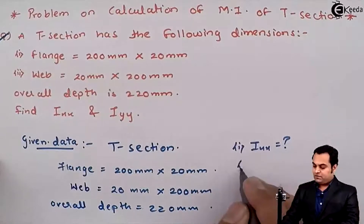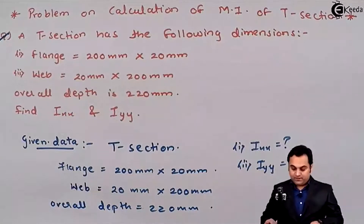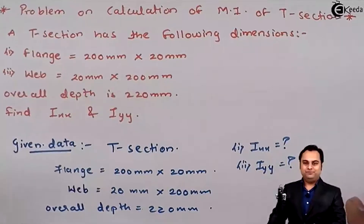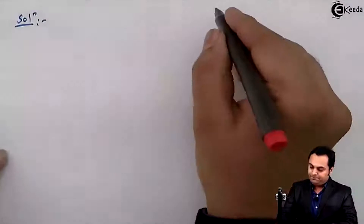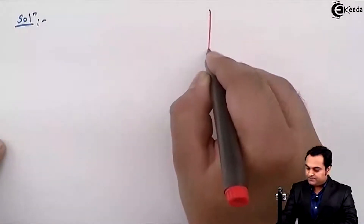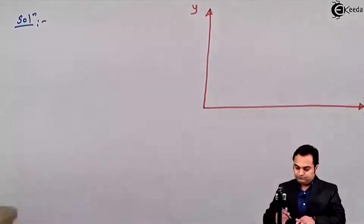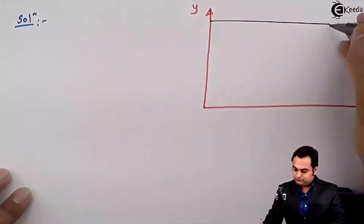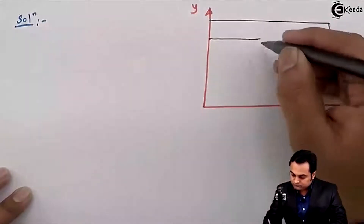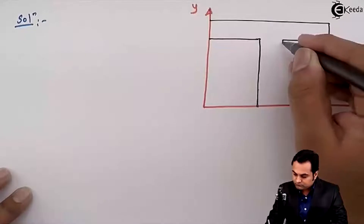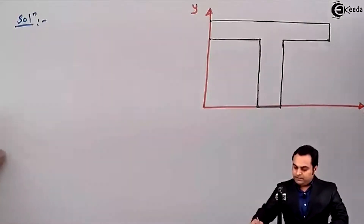This is the question we have in front of us. Now with the data available, let us try to get the solution. In the solution part, I'll first draw the T-section, and for that I'll draw an axis system with X and Y axes. Here is the T-section as described.